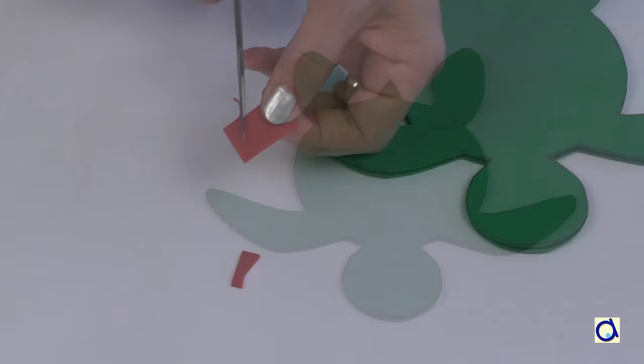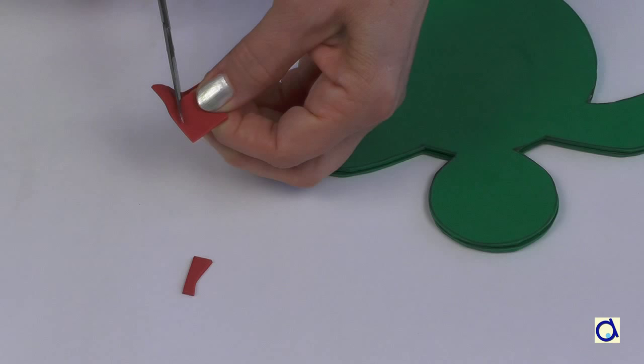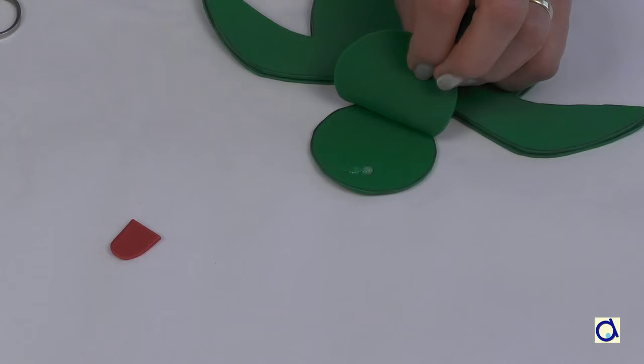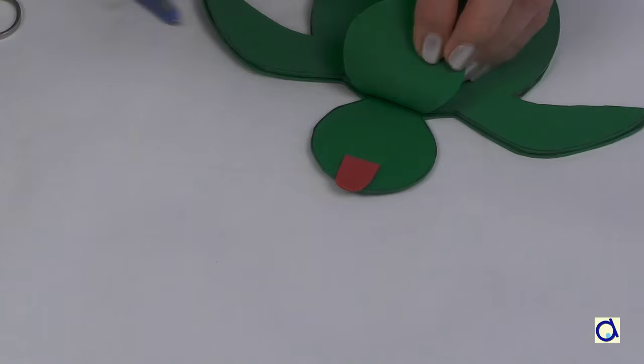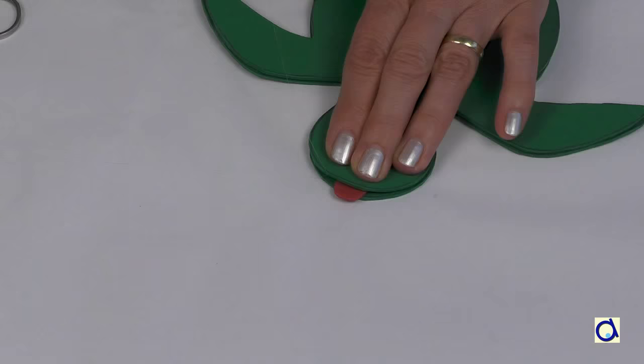When you are finished gluing the two layers of the body, take a piece of red foam and cut a little tongue. Put a dot of glue to glue the tongue between the two layers of foam that form the base of the head of the turtle. For a fun effect, let the tongue stick out a little. Then, glue the two layers of foam of the head together.